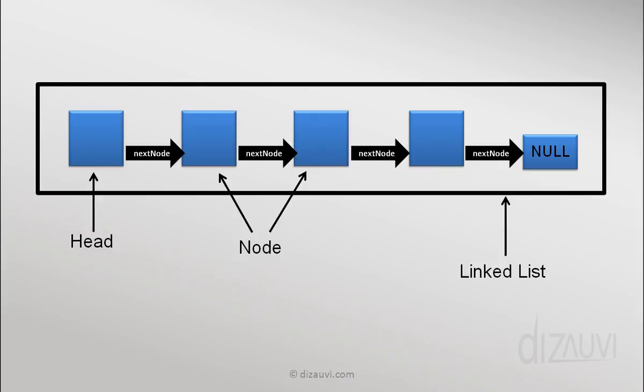As mentioned earlier, the linked list object contains a reference only to the head element, not to any other element. Although we can access any of these elements by starting from the head element and going to the next node from there.